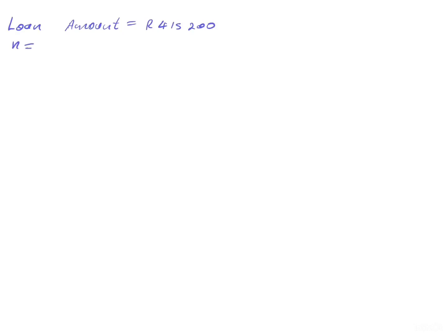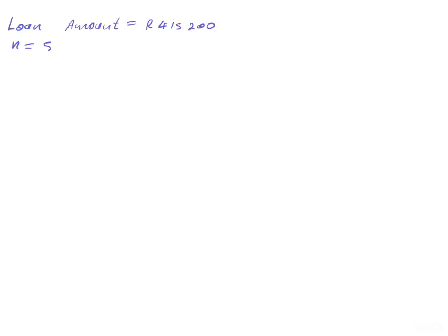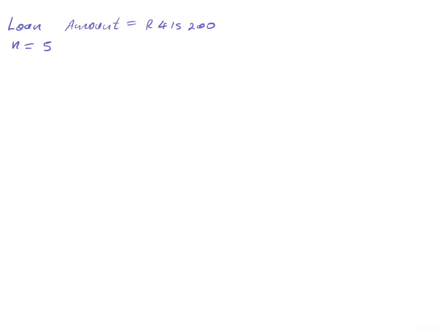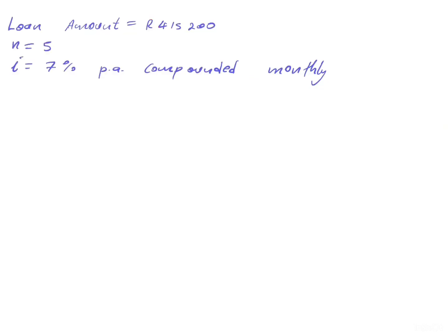The repayment period n is five years. The interest rate is 7% per annum compounded monthly. Since payments are made at the end of each month, m equals 12 because there are 12 months in one year, meaning they make 12 payments per year.